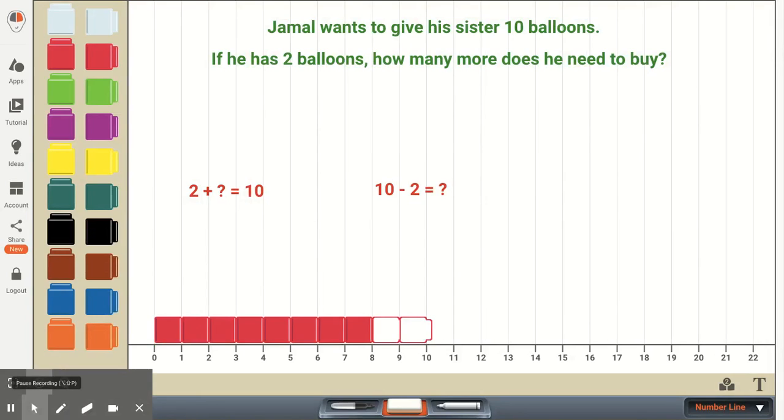Conversely, a student may first come up with an addition problem to solve a word problem, and then they might realize that it might be easier for them to use a subtraction problem. So, for instance, in this example, Jamal wants to give his sister 10 balloons. If he has 2 balloons, how many more does he need to buy?